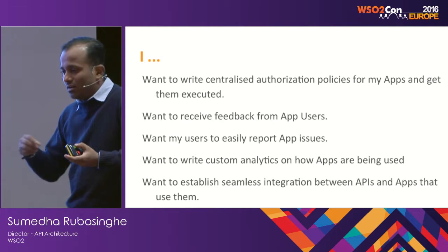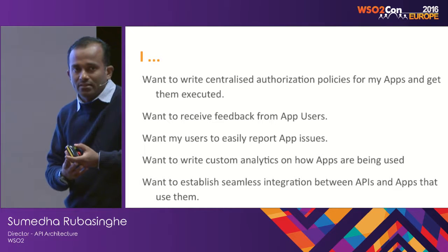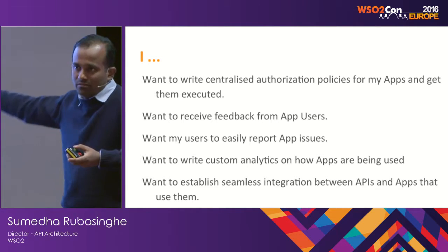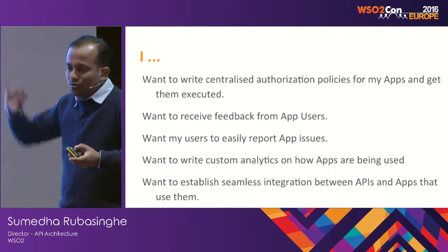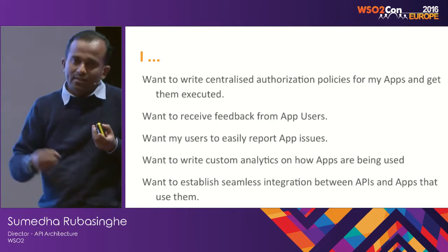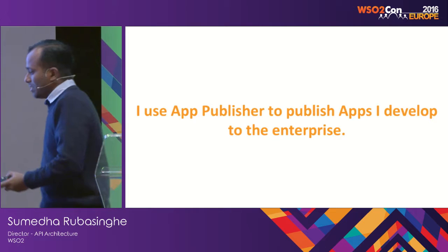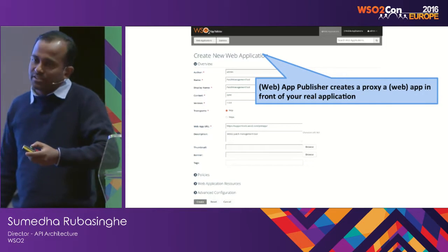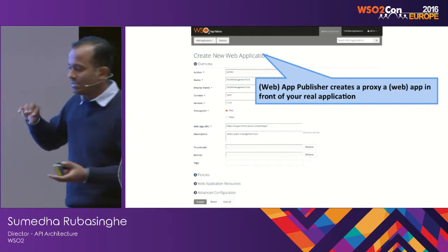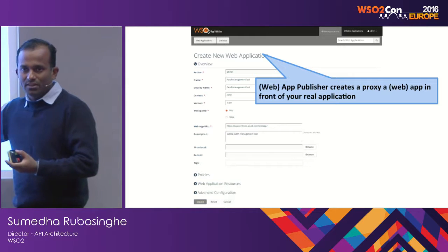These are typical problems any application developer faces. If you've developed an application hosted on Google Play or the Apple Store, you get some of these things built in. But those are native applications — you don't deal with single sign-on in the same way as web apps. There's a component within the App Manager called App Publisher that allows you to publish your application and creates a proxy for the real application you've developed.